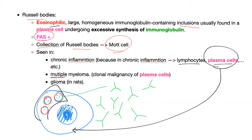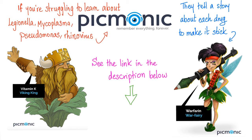Russell bodies are also seen in multiple myeloma. Why? Because multiple myeloma is a clonal malignancy of plasma cells. You can also see them associated with organisms such as Staph, Strep, E. coli, MRSA, Lusinella, Mycoplasma, Pseudomonas, and Rhinovirus.